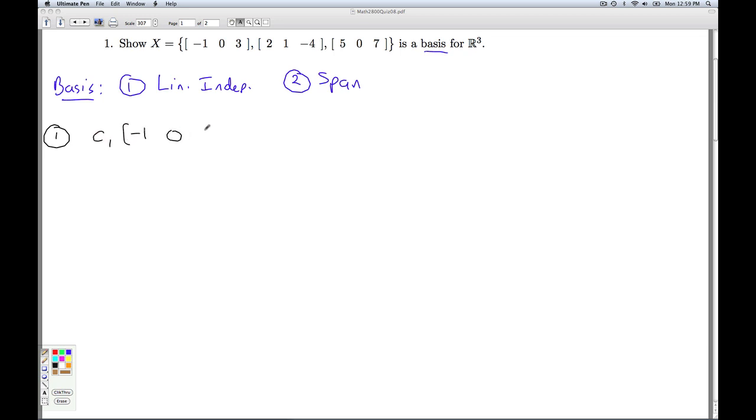c₁ times the first vector plus c₂ times the second vector plus c₃ times the third vector. And this is equal to the zero vector, which we write in R³ like that.